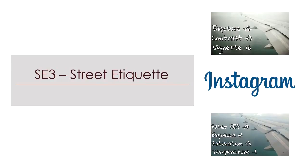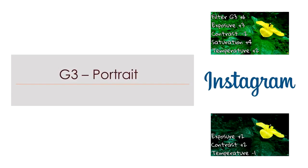If you're moving towards a black or dark tone, the street etiquette filter SE3 in VSCO does the job well — it changes the photo into a darker shade, giving an intense feeling. The last filter is called G3, a portrait filter that gives a sunny warm tone to your photo and is very suitable for outdoor photo shoots.